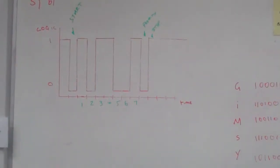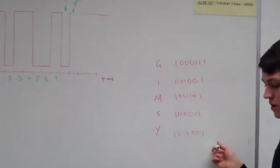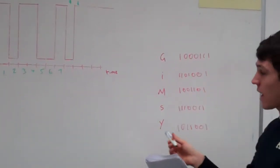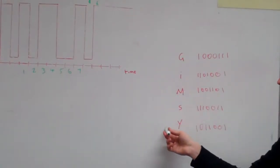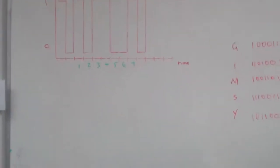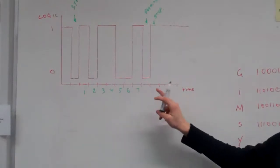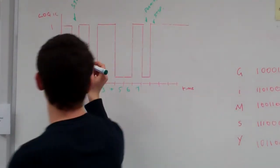The next part of the question asks you, so using this table, determine which letter has been sent through the transmission. The easiest way is to label these up.